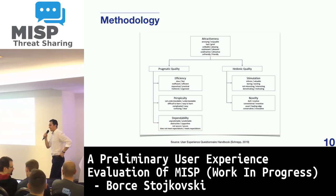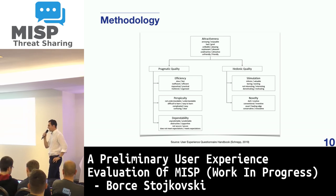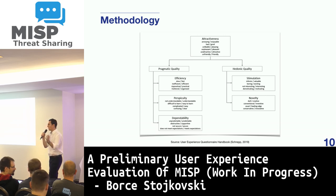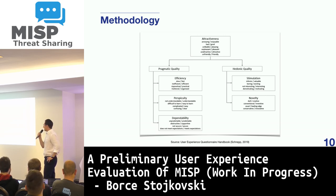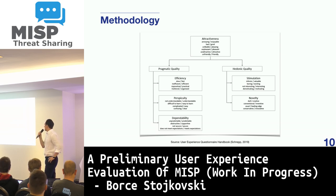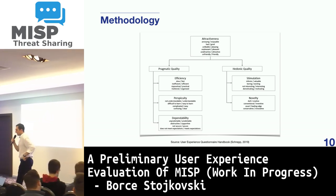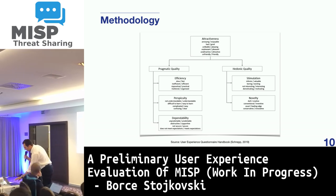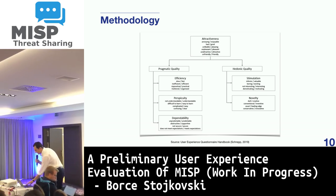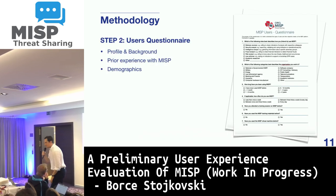Attractiveness is a pure balance dimension, whereas efficiency, dependability, and perspicuity are more goal-directed or pragmatic qualities. On the hedonic side, we have stimulation and novelty — aspects which in the past have not typically been considered via usability studies.